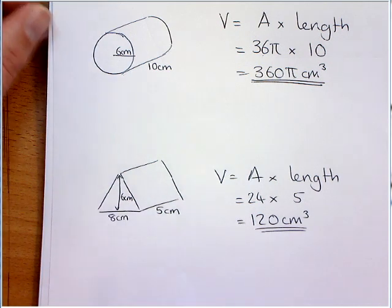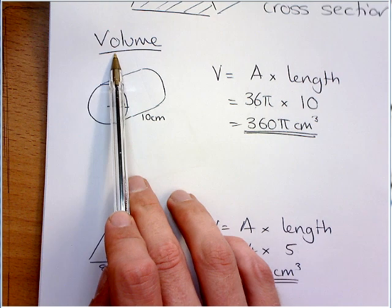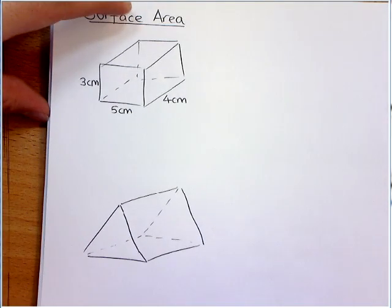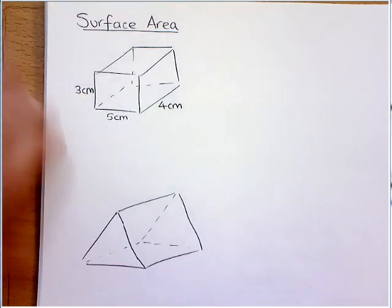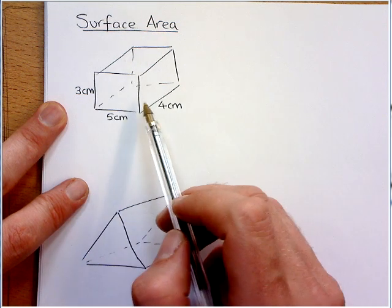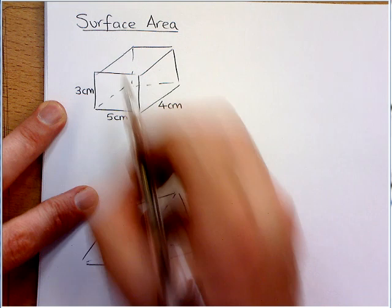Now, if we take a prism, though, and don't ask you the volume, we can also ask you the surface area. Now, this is pretty simple, but just far longer. So, surface area means the area of every single surface. So, that's the bottom, the top, the front and the back, and the two sides.